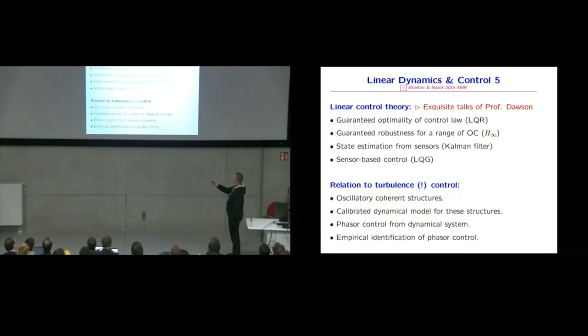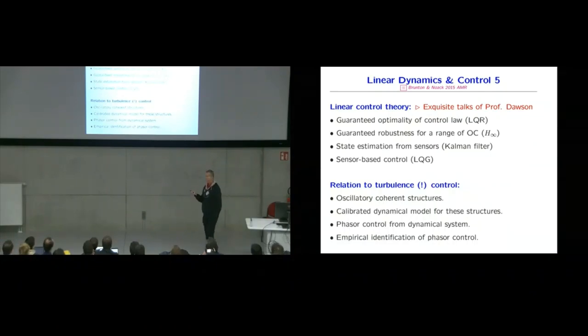We have heard the exquisite talk of Scott. So there are a number of nice things you can do in addition, which energy-based control does not deliver. So you can guarantee optimality of the control, guarantee robustness. You can do the state estimation from sensors to sensor-based control and so on. So lots of nice things. Why is this in my lecture about turbulence control? Well, you have oscillatory coherent structures. You can have a dynamical model, a calibrated dynamical model for those. And at the end, you will always arrive at some phasor control for the dynamical system.